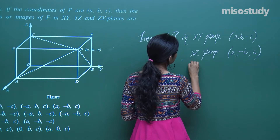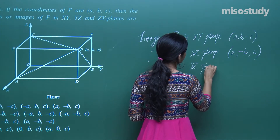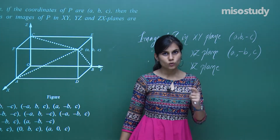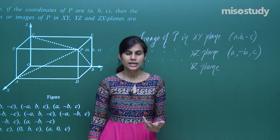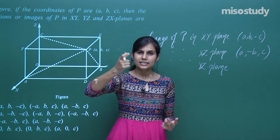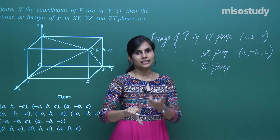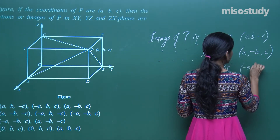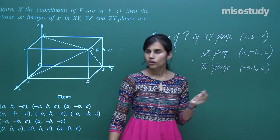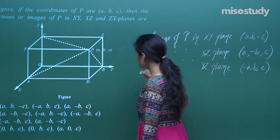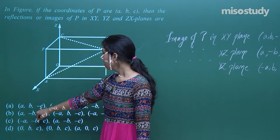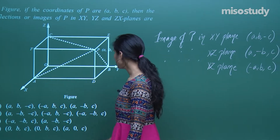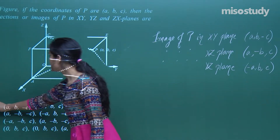For the image along the y-z plane, only the x coordinate changes — if it is 2 units along the x-axis, the image is at −2 units. So the reflection in the y-z plane is (−a, b, c). Summary: x-y plane gives (a, b, −c); y-z plane gives (−a, b, c); x-z plane gives (a, −b, c). This is the correct option.